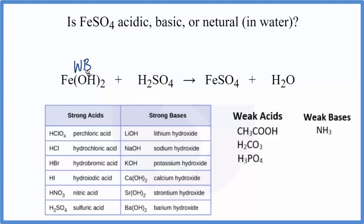Let's write WB. It's got this hydroxide group, so it's a base, but it's not a strong base. H2SO4 - that's right here. That is a strong acid. So we're going to write SA up here for strong acid.